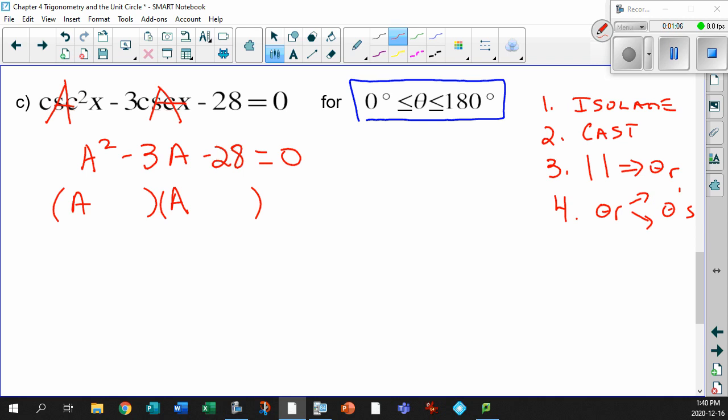So you've got an A equals, or A minus 7, and an A plus 4. There's your values equals zero. So this means A minus 7 equals zero, and A plus 4 equals zero.